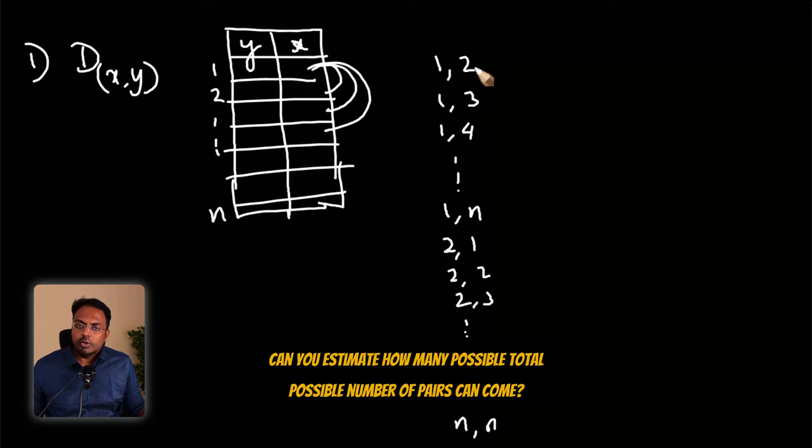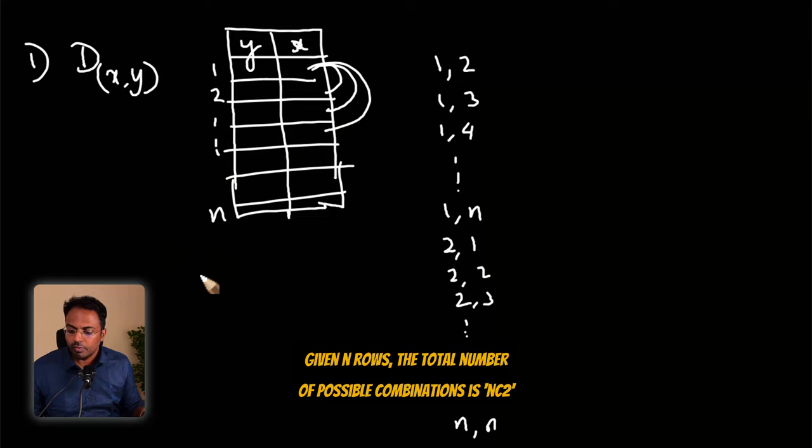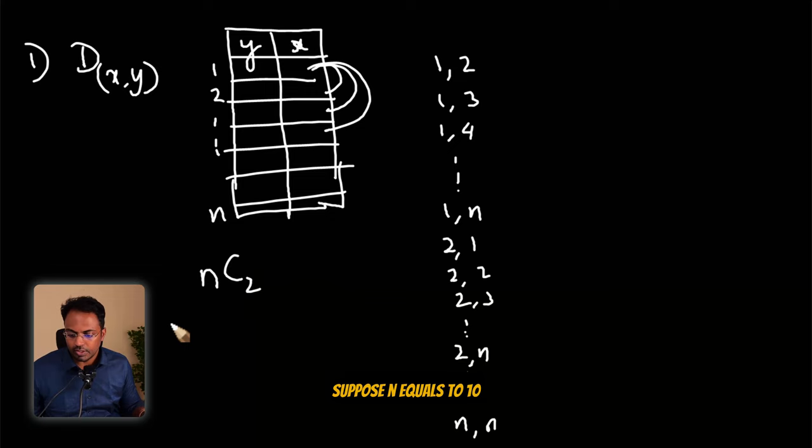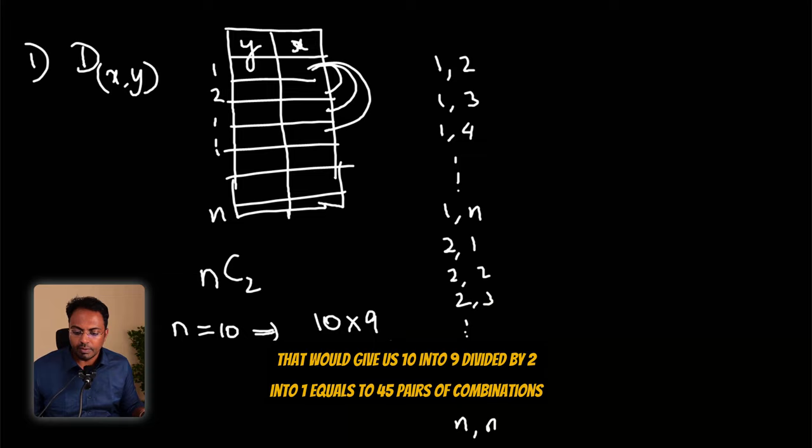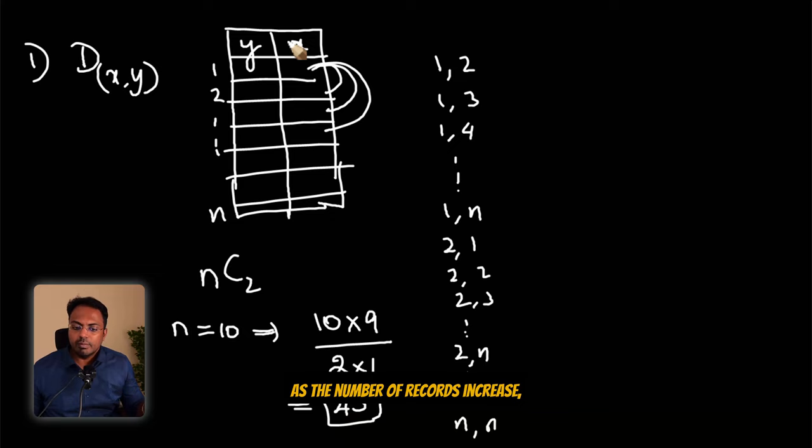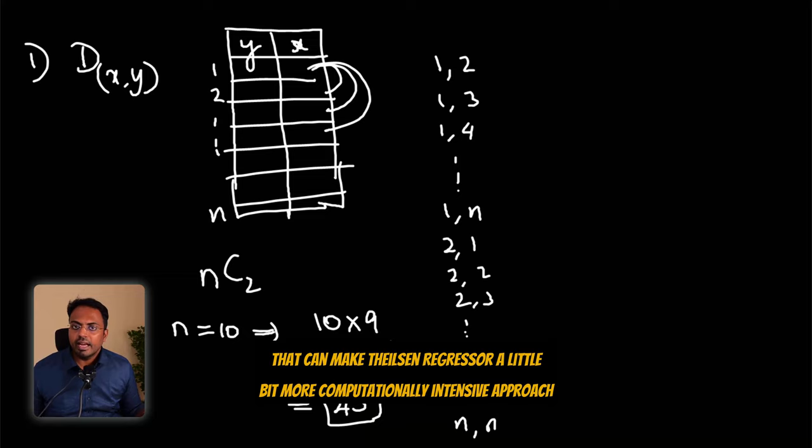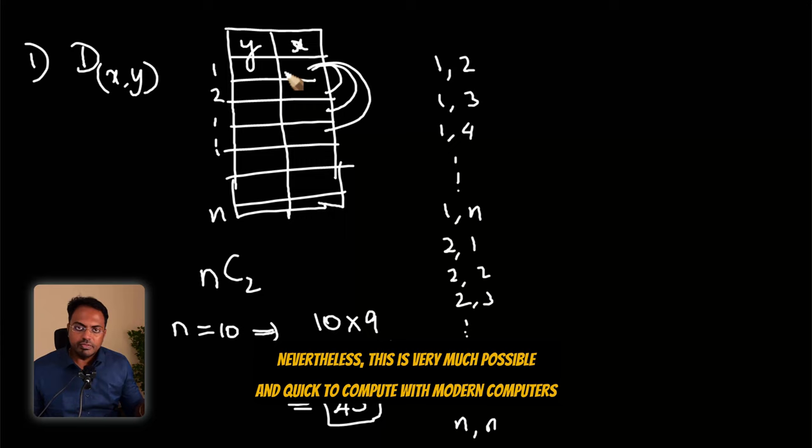Can you estimate how many possible total number of pairs can come? Given n rows, the total number of possible combinations is nC2. Suppose n equals 10, that would give us 10 into 9 divided by 2 into 1 equals 45 pairs of combinations. So as the number of records increase, the number of pairs that is possible can increase drastically. That can make Theil-Sen regressor a little bit more computationally intensive approach. Nevertheless, this is very much possible and quick to compute with modern computers.